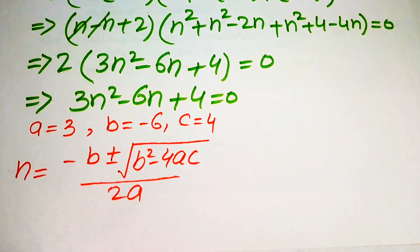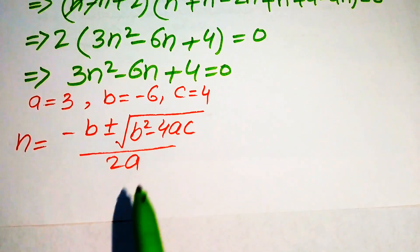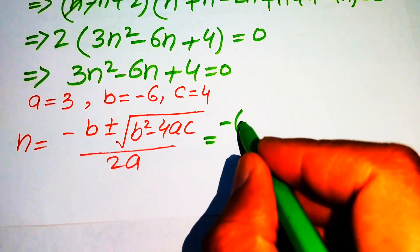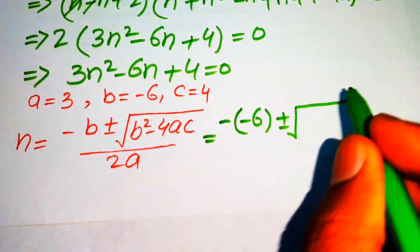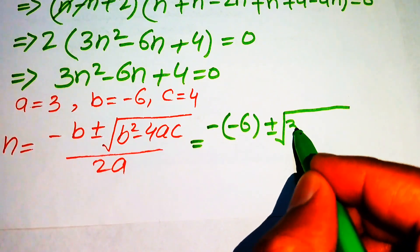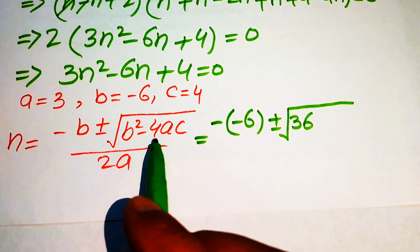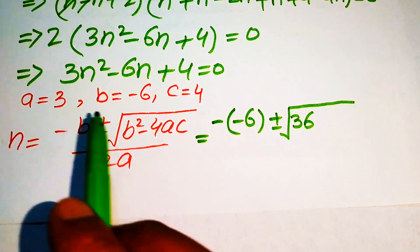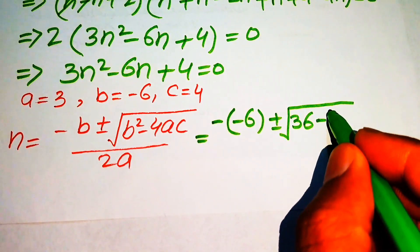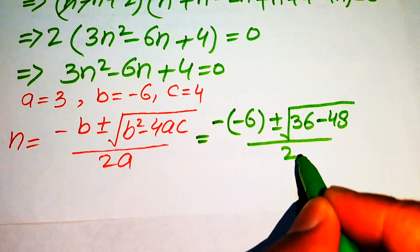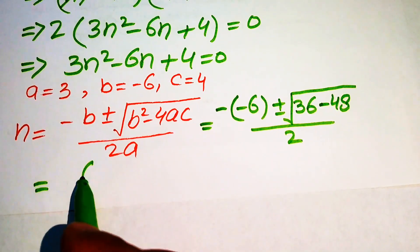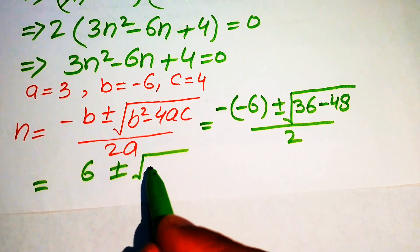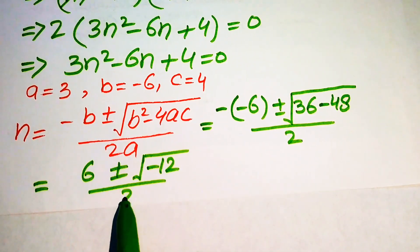Substituting the values a equals 3, b equals minus 6, and c equals 4 into the formula, we get minus times minus 6, plus or minus square root of minus 6 squared minus 4 times 3 times 4, divided by 2 times 3. This gives 6 plus or minus square root of 36 minus 48, all divided by 2. Since 36 minus 48 equals minus 12, we have 6 plus or minus square root of minus 12, divided by 2.